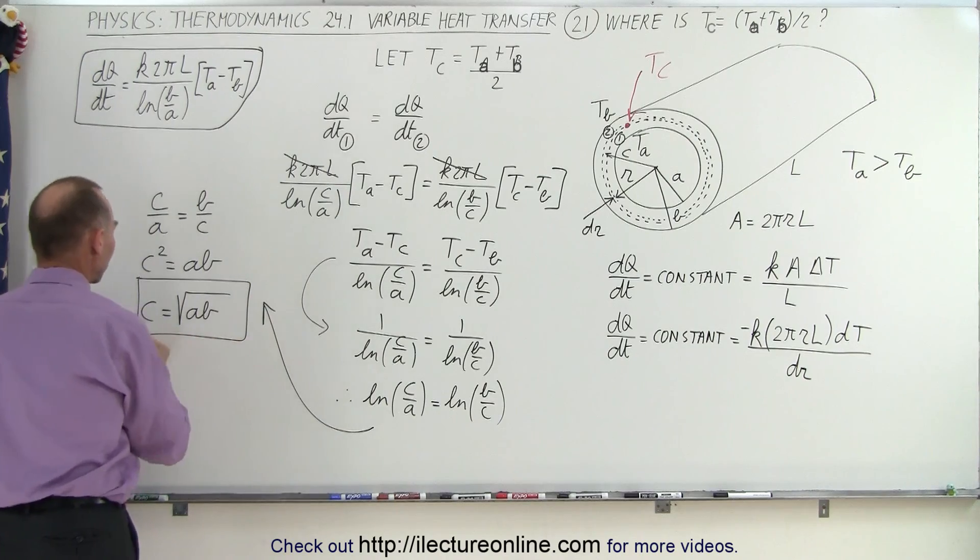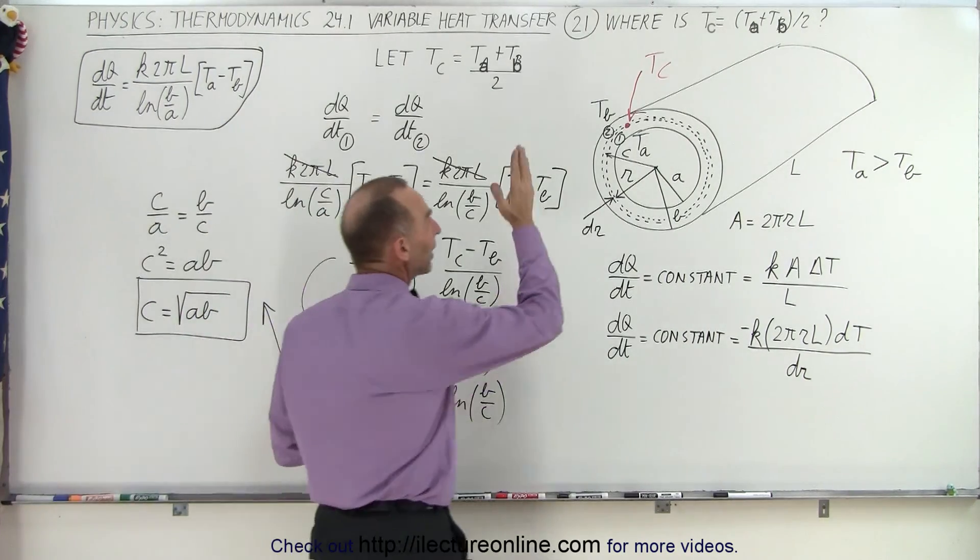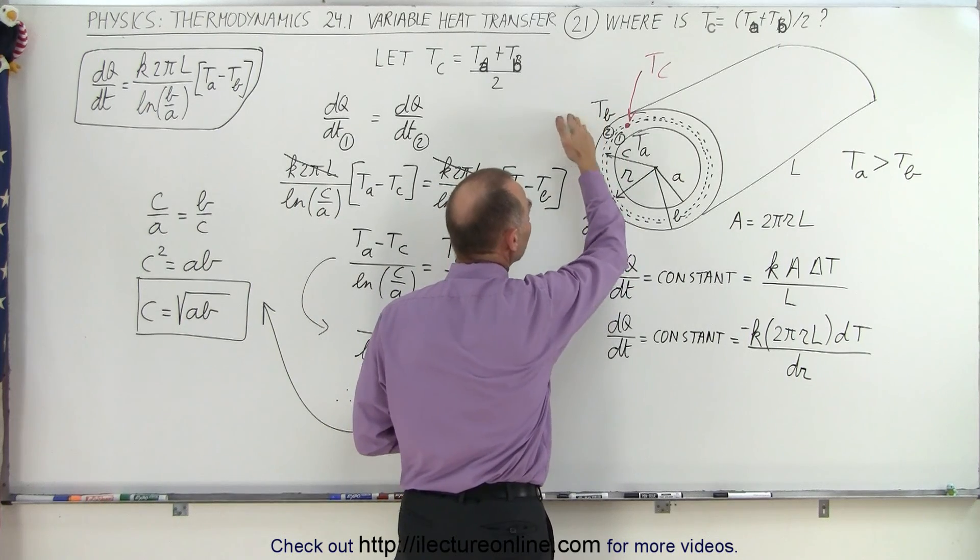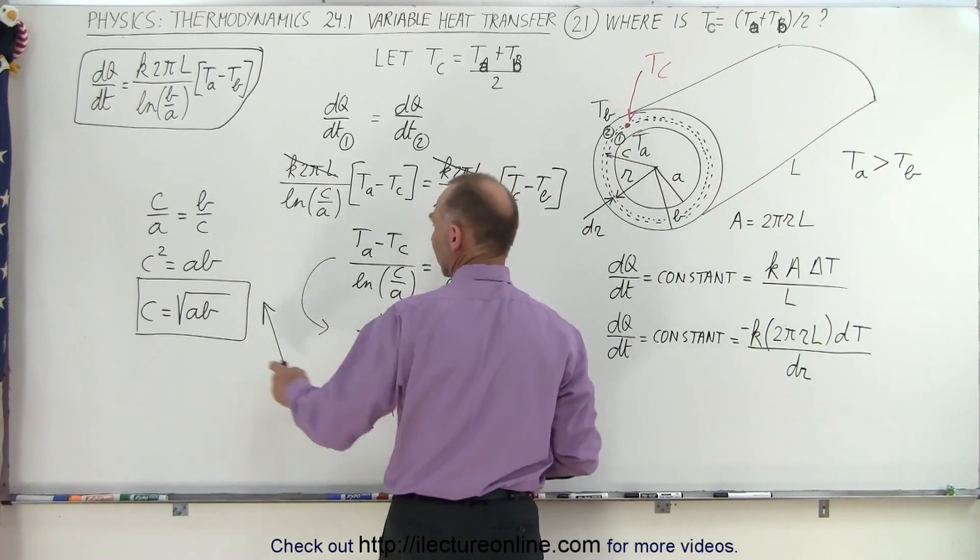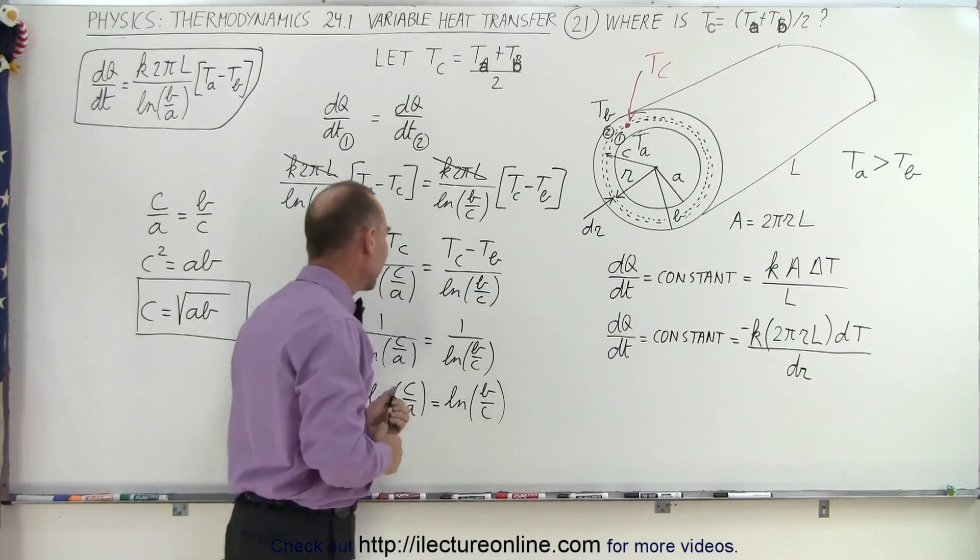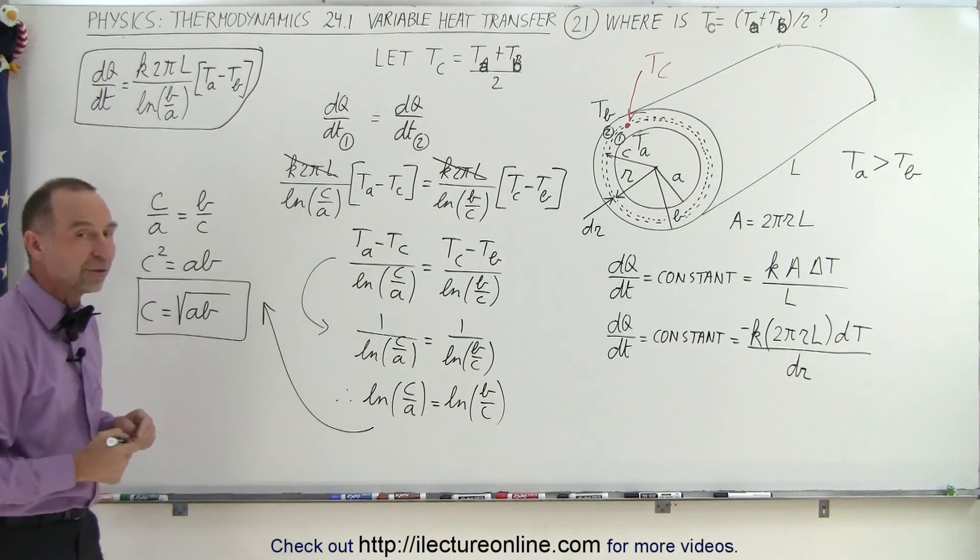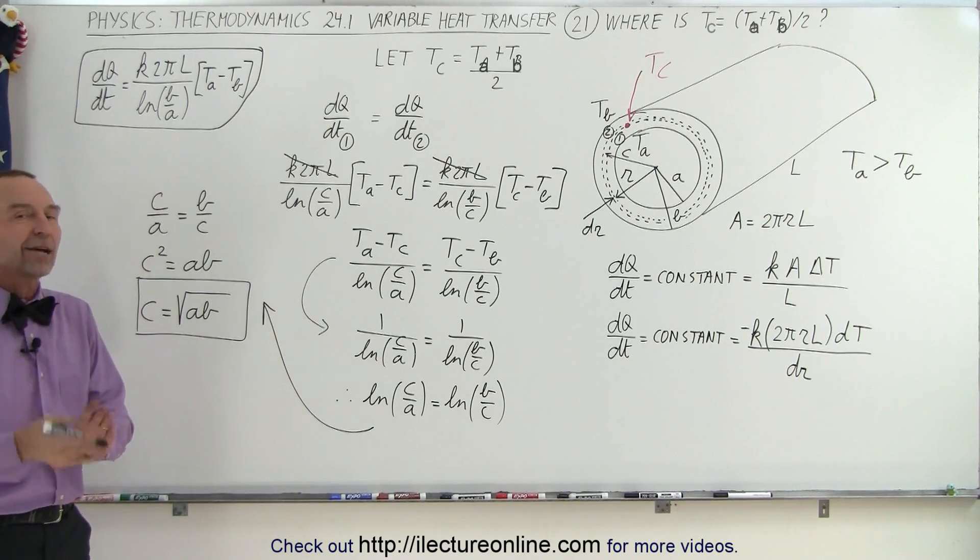And this is the location for C, the point where the temperature is right halfway between Ta and Tb. In other words, we know the inside radius, we know the outside radius, and therefore C is equal to the square root of the product of those two radii. And that is the position where the temperature will be exactly halfway between the inside and the outside temperature.